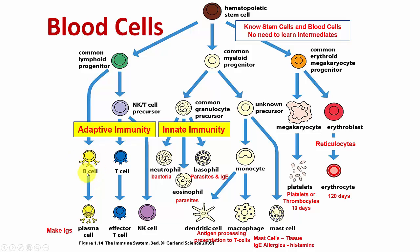Adaptive immunity is provided by the lymphocytes: the B cells that make antibodies — they become plasma cells and make IgG immunoglobulin antibodies. Then we have T cells, which are the effector cells of the immune system, and you'll talk more about those in immunology. And the natural killer cells, which kill cells such as cancer cells.